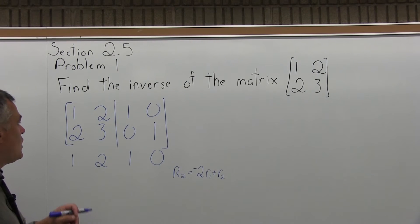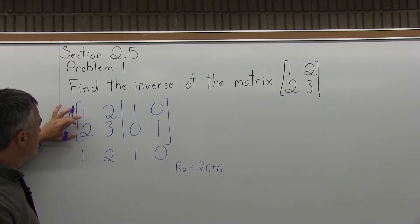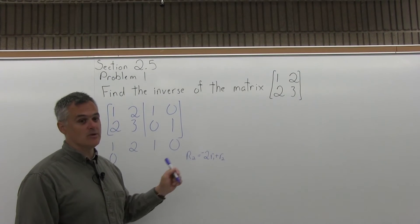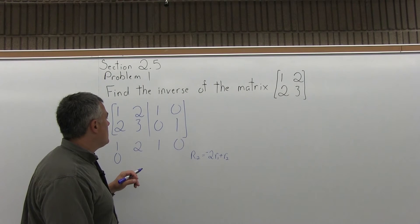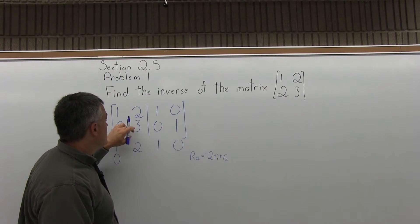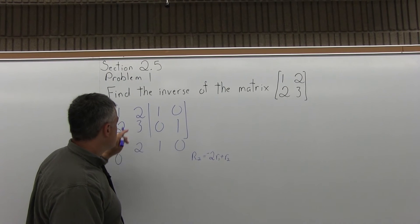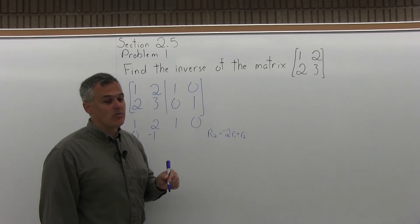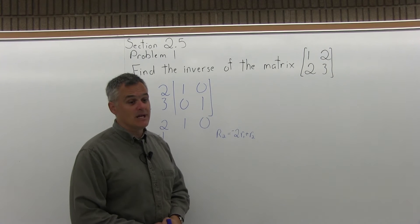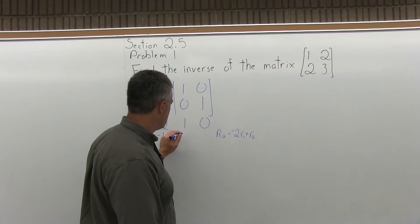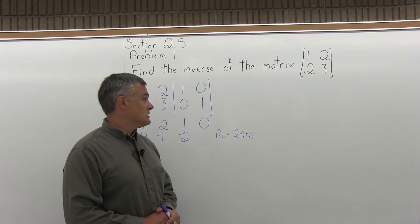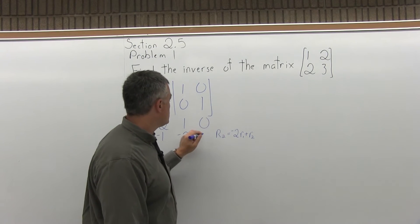As we apply that equation, in the first column: negative 2 times 1 gives negative 2, plus positive 2 gives 0. In the next column: negative 2 times 2 is negative 4, plus positive 3 is negative 1. Then the third column: negative 2 times 1 is negative 2, plus 0 is negative 2. And the fourth column: negative 2 times 0 is 0, plus 1 is 1. So that step is complete.